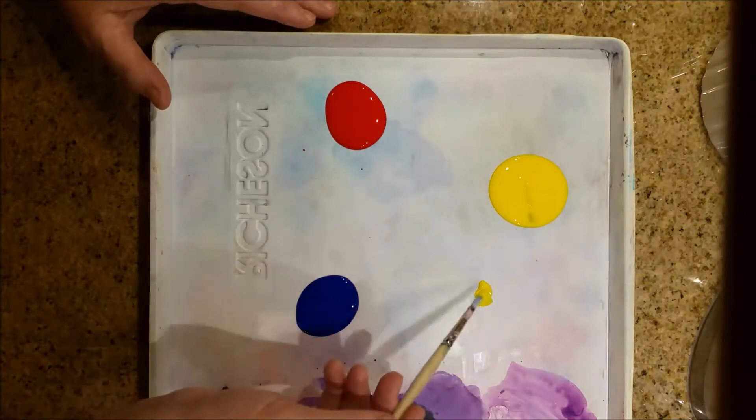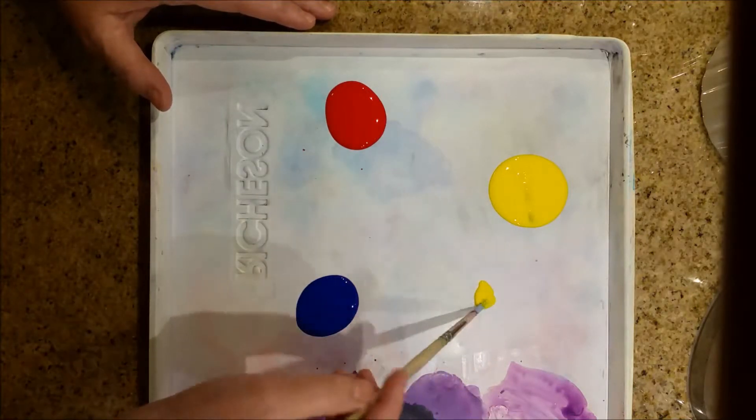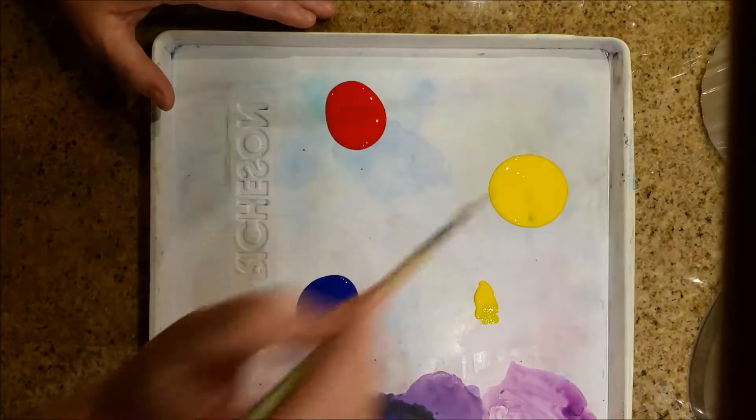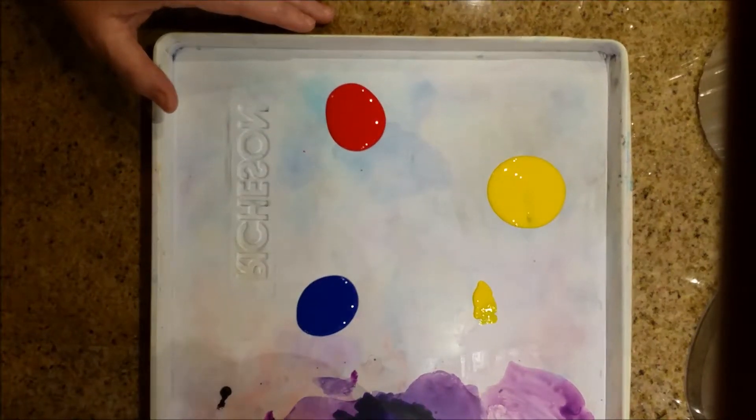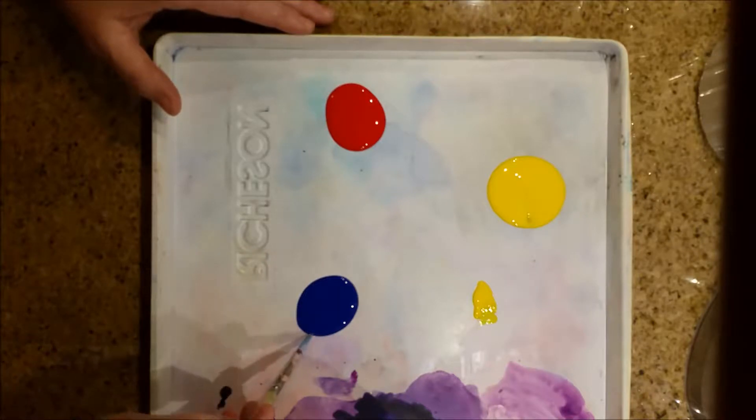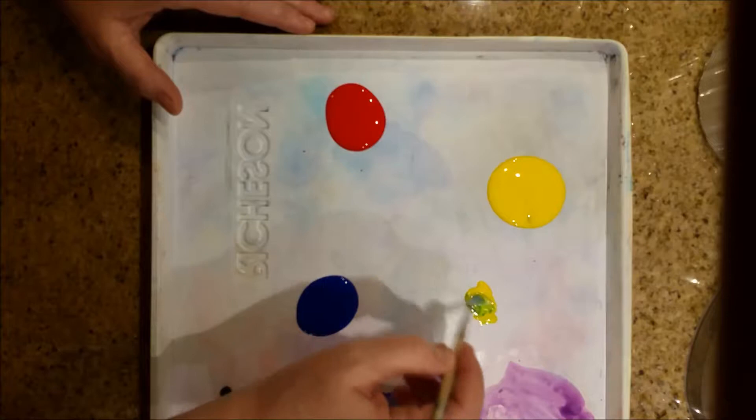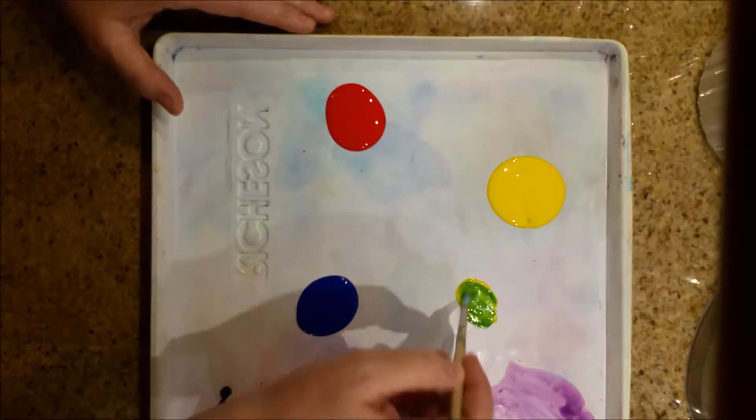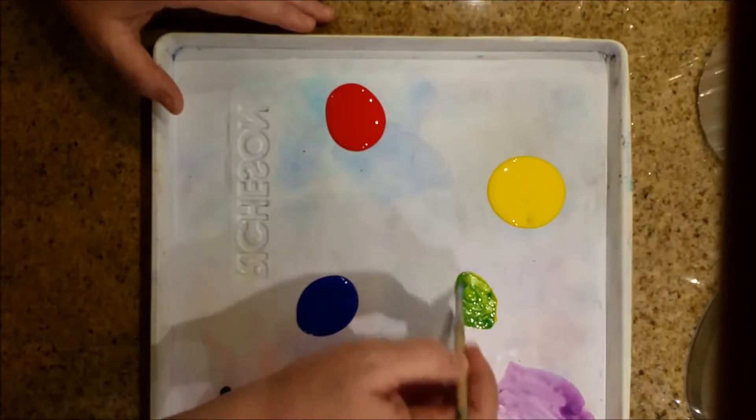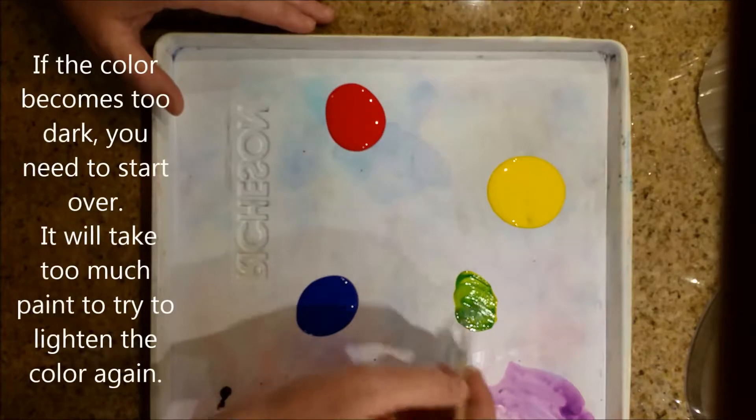I'm going to take some of my yellow, move it over here to a new spot so I don't contaminate my original yellow. Rinse my brush, I'm going to take a tiny dot of blue and mix it into the yellow. There was more yellow than blue there. And now I have my green.